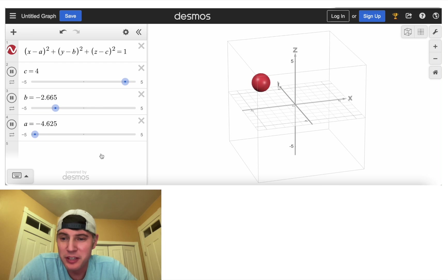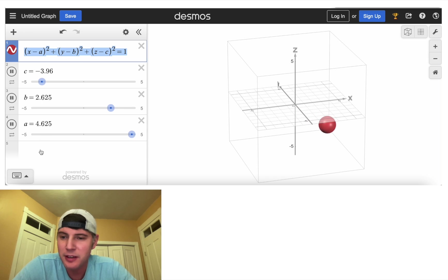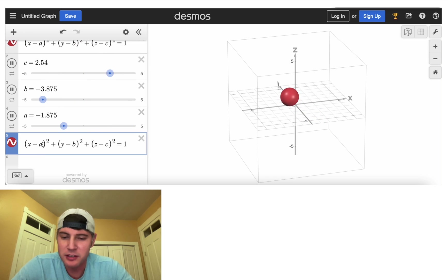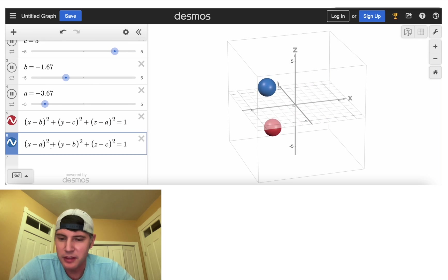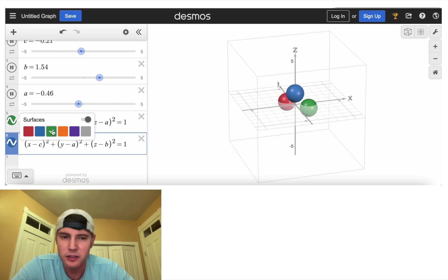And we can have a little bit more fun with this. If we want to add some more spheres, we can copy this. And then let's just shift it. Let's make this one B, this one C, and this one A. And let's do it again. And then let's make this one C, this one A, and this one B. And let's change the color of this one to green.